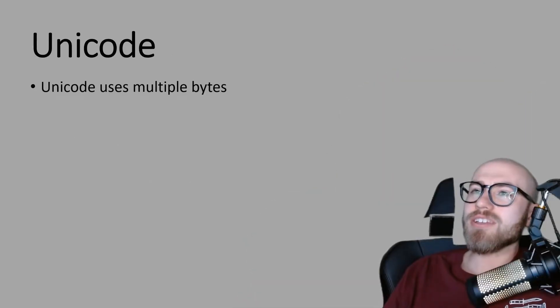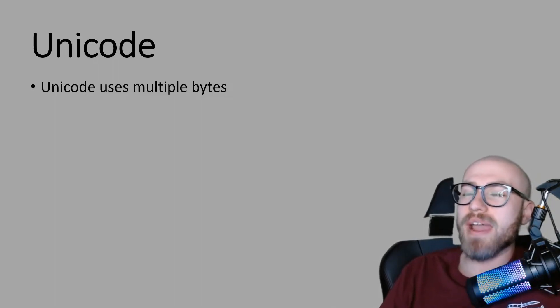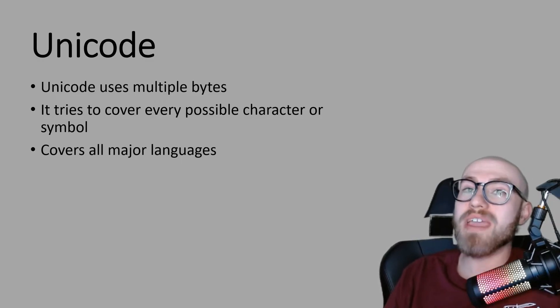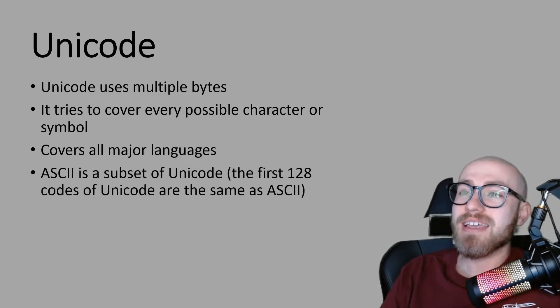Another character set that we need to be aware of is Unicode. Unicode uses multiple bytes, so we were looking at ASCII earlier that only used one byte of information, whereas Unicode uses multiple bytes. Because it's got multiple bytes of information it can store millions of possible characters which is obviously enough to cover all major languages, and as we mentioned earlier ASCII is actually a subset of Unicode so the first 128 codes of Unicode are exactly the same as ASCII.